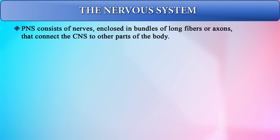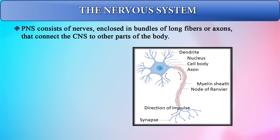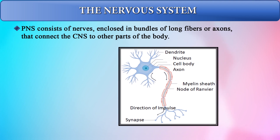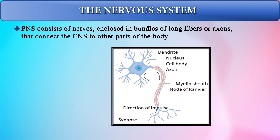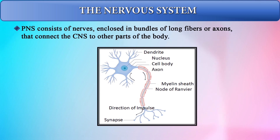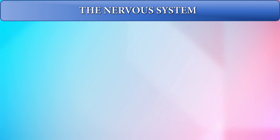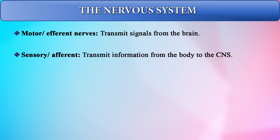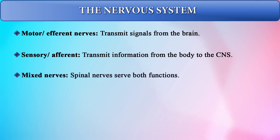The peripheral nervous system consists of nerves enclosed in bundles of long fibers or axons, and they connect the central nervous system to other parts of the body. In the diagram you can see the dendrite, the nucleus, the cell body, the axon, and how the myelin sheath is covering the axon. There is also the node of Ranvier where there are certain junctions, the synaptic junctions, and the direction of the nerve impulse. Motor and efferent nerves transmit signals from the brain, while sensory and afferent nerves transmit information from the body to the central nervous system. There are also mixed nerves such as the spinal nerves which serve both functions.